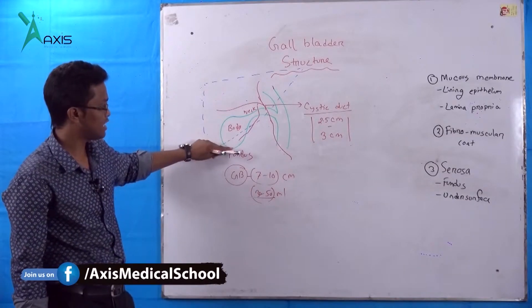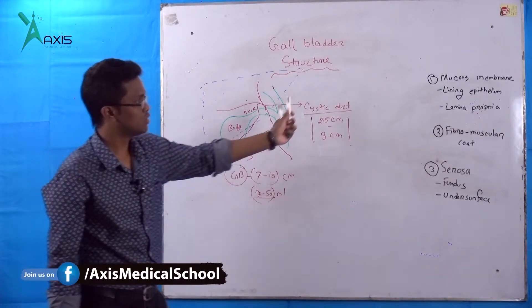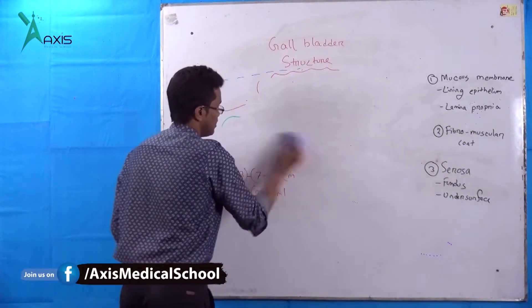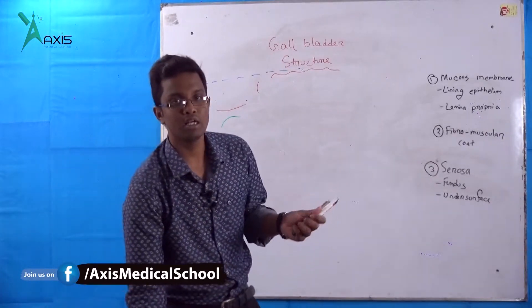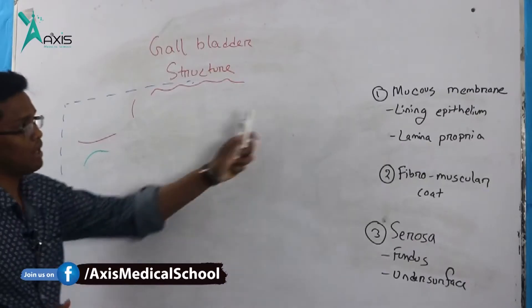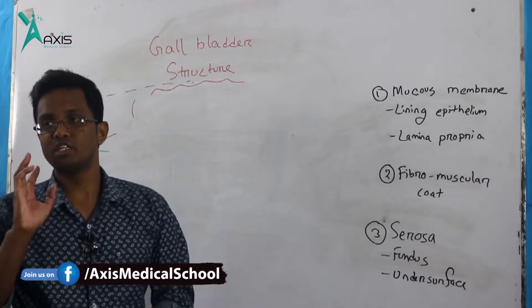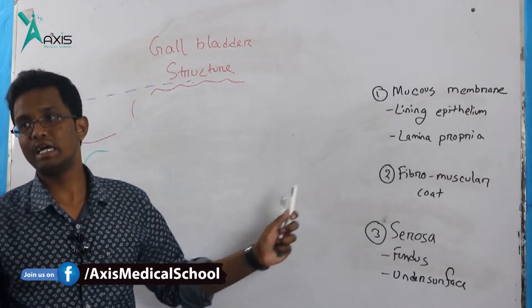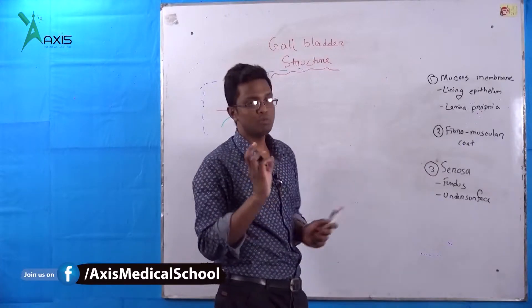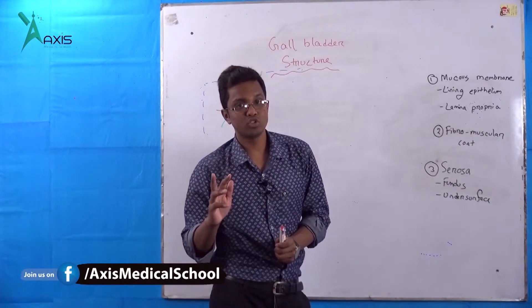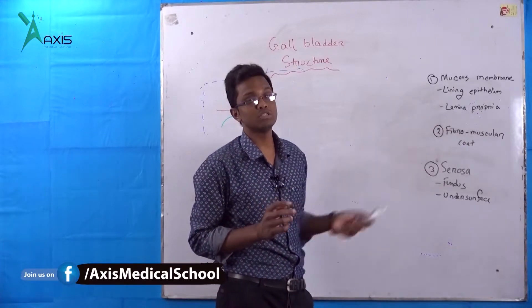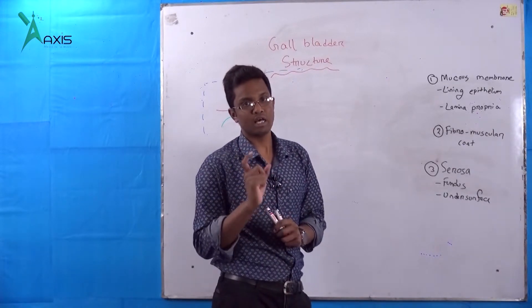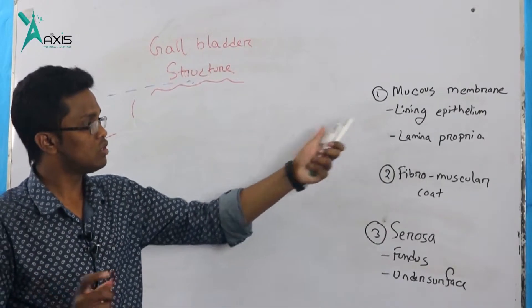This is the basic anatomy. Now the gallbladder structure, which is very important. This is the histology, which is very important. The wall has three layers. The mucosal layer has two parts.